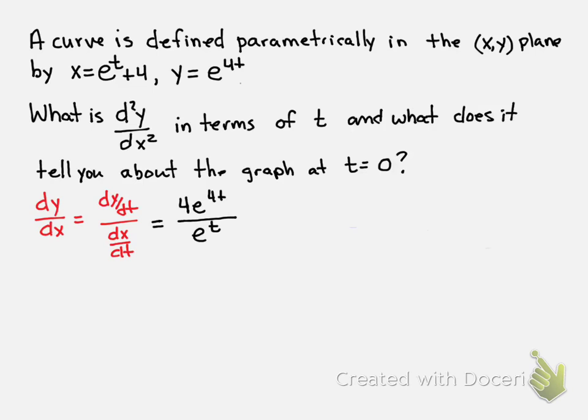We're going to have 4 times e^(4t-t), which is the same as 4e^(3t). That simplification makes it much easier to take our second derivative.